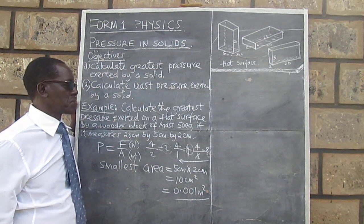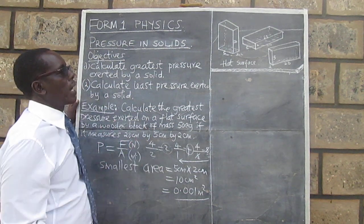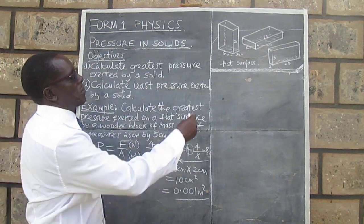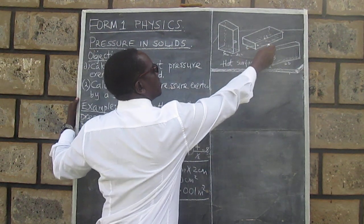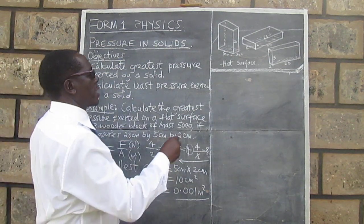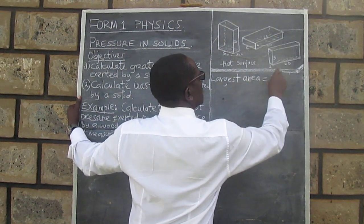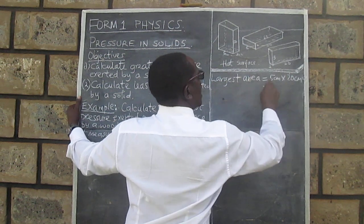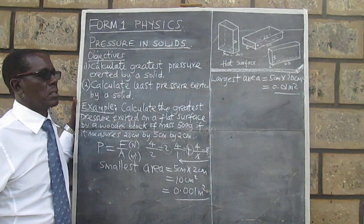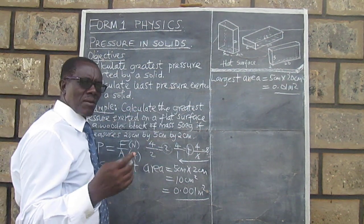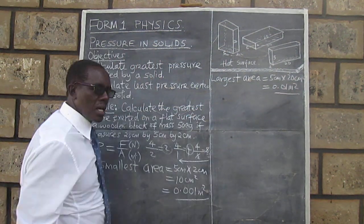Now because we need to work out the least pressure, it means we also need to get the largest area for our solid. The smallest area is 5 by 2 cm. The largest area is 5 cm by 20 cm. So the largest area equals 5 cm by 20 cm, that gives us 0.01 square meters. I have multiplied 5 by 20, gotten 100 square centimeters, divided by 10,000, and ended up with 0.01 square meters.